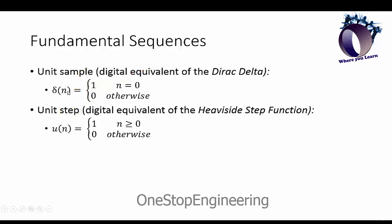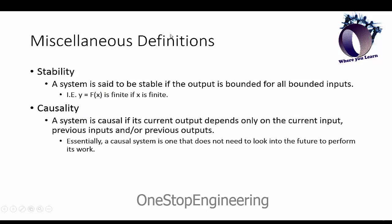A few other definitions we have for sequences: stability and causality. A system is said to be stable if the output is bounded for all bounded inputs. That's a very mathematical way to describe it. Essentially what we mean is that a finite input will not give us an infinite output of the system. Causality simply means that the system can exist in real time, meaning that the system does not need values from the future in order to compute its current output. That's what we mean by a causal system.